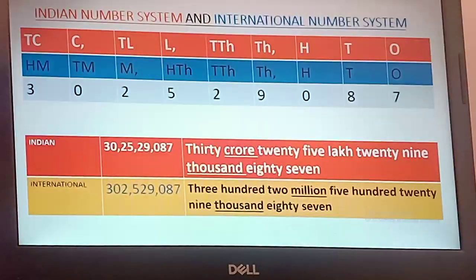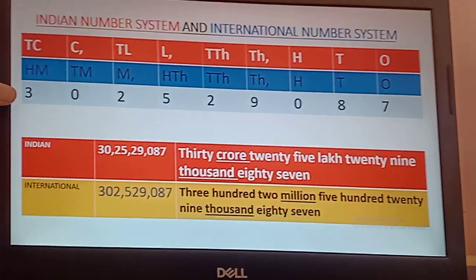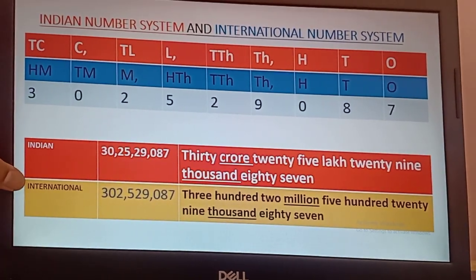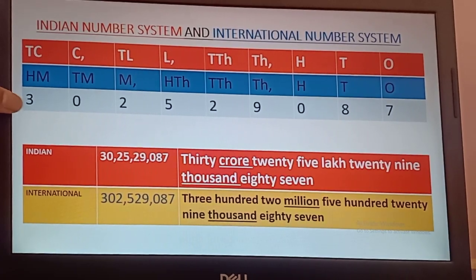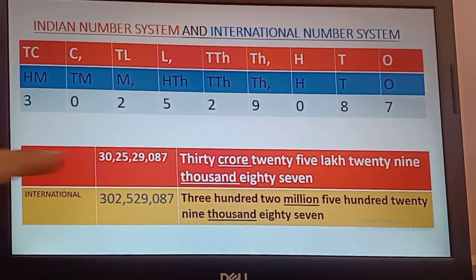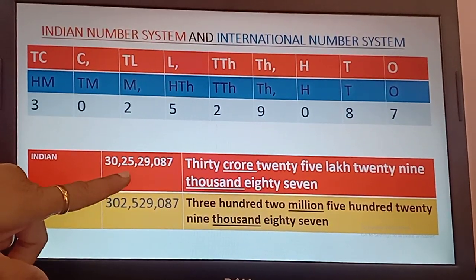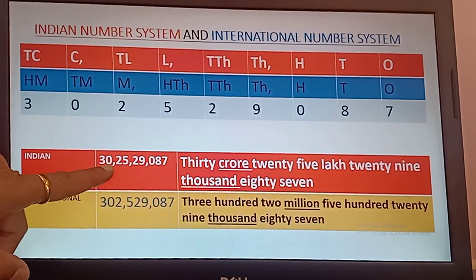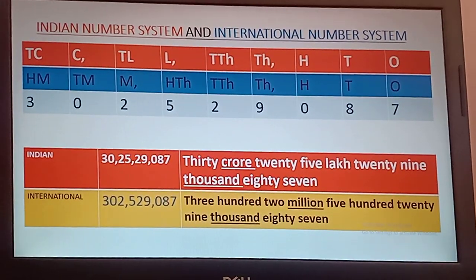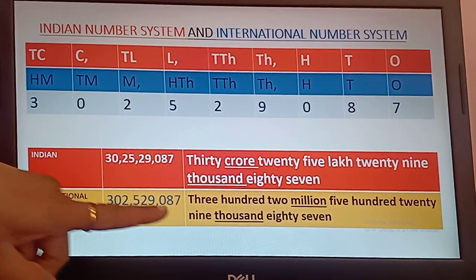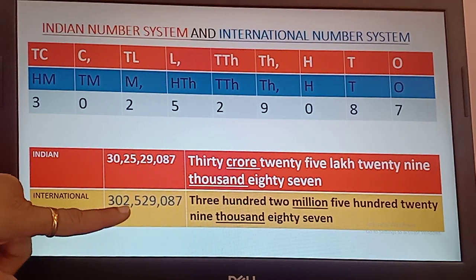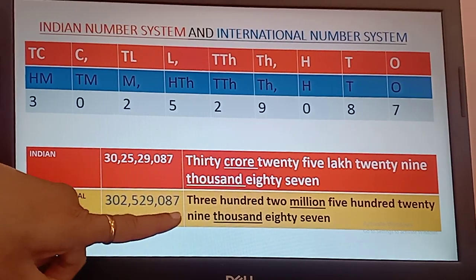Okay students, let's practice. Here is a number. First, we will write this number in Indian number system, then in international number system. We put commas according to Indian number system: 3, 2, 2, 2 — ones group, thousands group, lakh group, crore group. The number reads: 30 crore 25 lakh 29,087. In international system, we split this number in groups of 3, 3, 3 digits: 302,529,087.